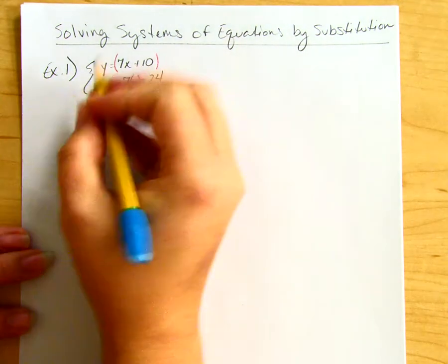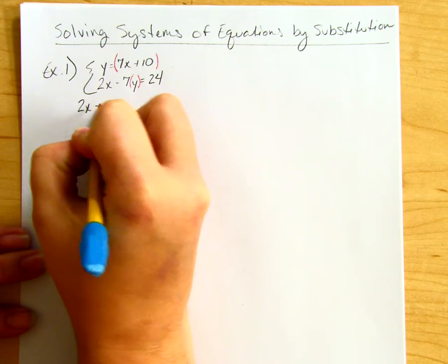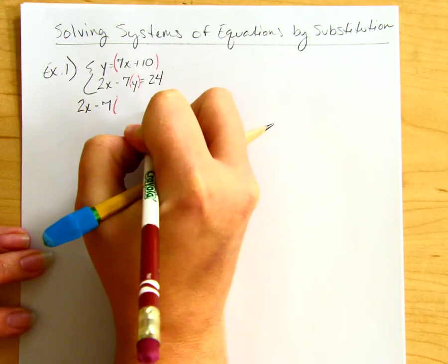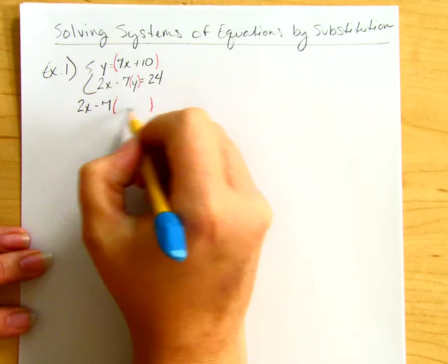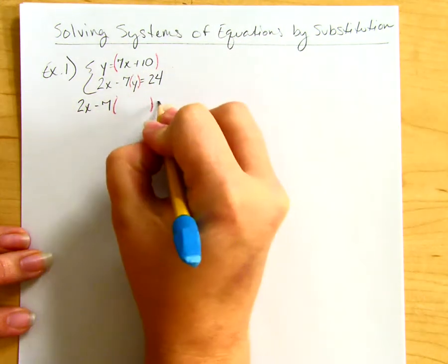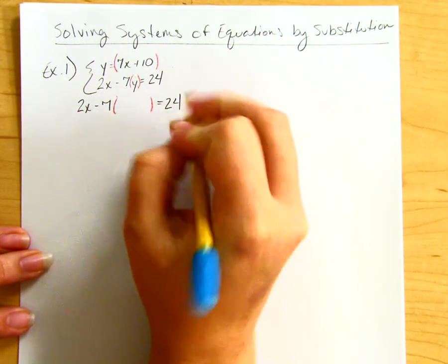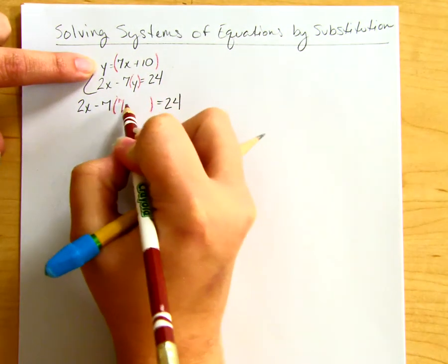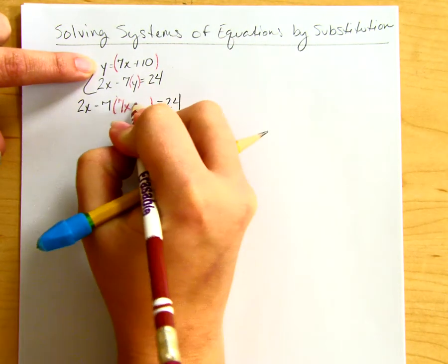So I'm going to rewrite the second equation as 2x minus 7 times, and I'm going to plug in what y equals from the first equation. In this case, y is 7x + 10.